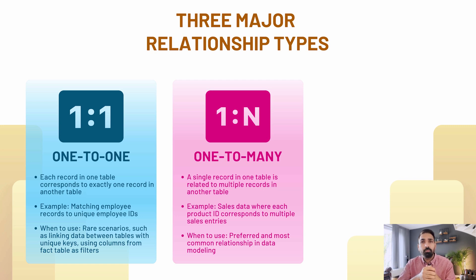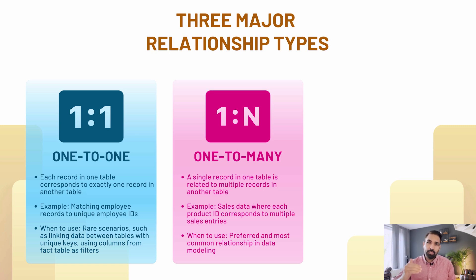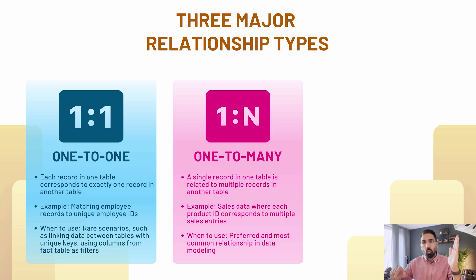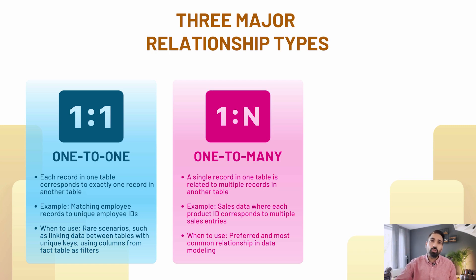For example, in a product table you have product names. One product can be ordered by multiple customers multiple times, generating many transactions in the fact table — so one product relates to many transactions. Similarly, in a banking example, an employee name is in the dimension table and one employee can have multiple transactions — that's your one-to-many relationship.